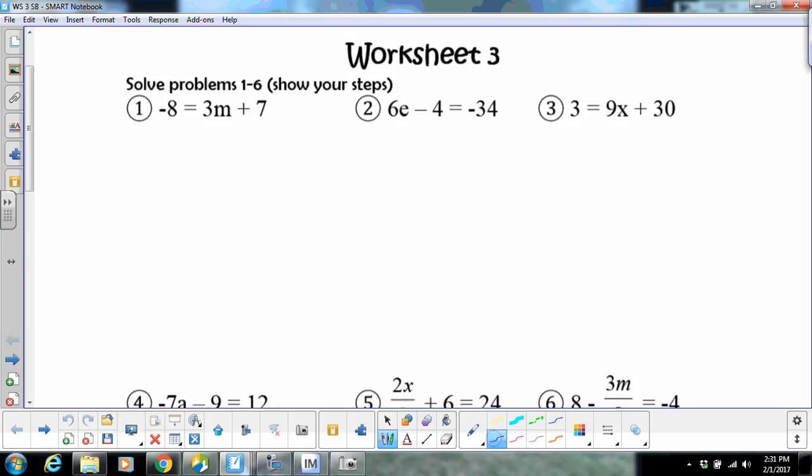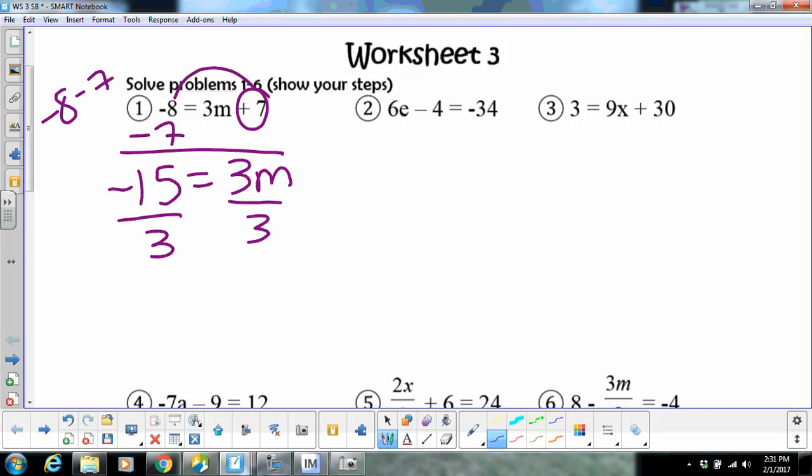When I move that seven it becomes negative. So then what we've got here is negative eight minus seven. Remember, if I write that out, that's the problem most of y'all were missing today. So that's going to give me negative 15 equals 3m. Divide by three, and m equals negative five.